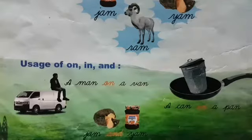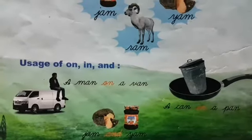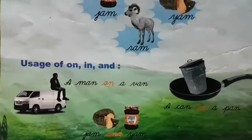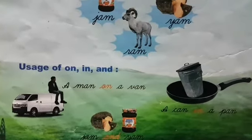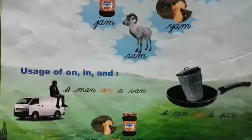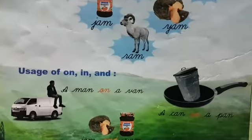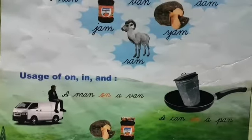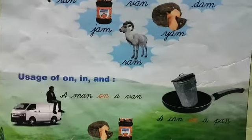Now we are going to read usage of ON, IN, and AND. First picture is A MAN SITTING ON A VAN. So you have to read: A MAN ON A VAN. Spelling for ON is O N.